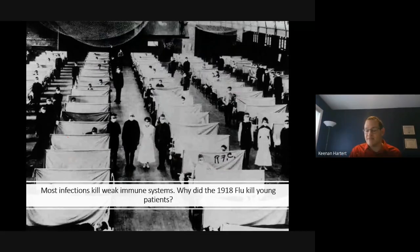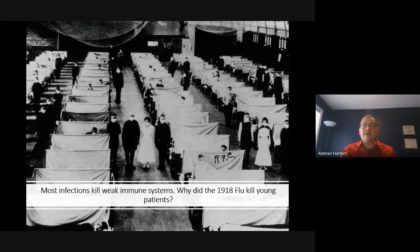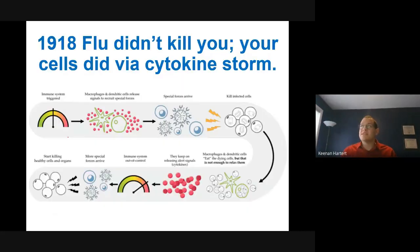The 1918 flu was very different than what we've experienced recently, exacerbated by the aftermath of war and poor hygiene practices. Why was it that young and healthy patients in 1918 were the ones succumbing? Why don't strong immune systems always win? The answer is something called cytokine storm. The 1918 flu virus didn't kill you — your immune system did.